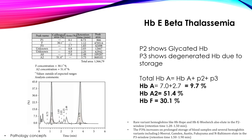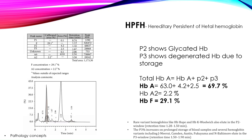HbE beta thalassemia: HbA is 9.7%, HbA2 is 51.4%, and HbF is 30.1%. Because of the elevation of HbF along with elevation of HbA2, we can conclude that it is compound heterozygous HbE beta thalassemia.